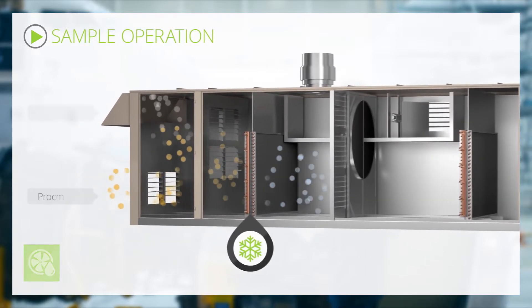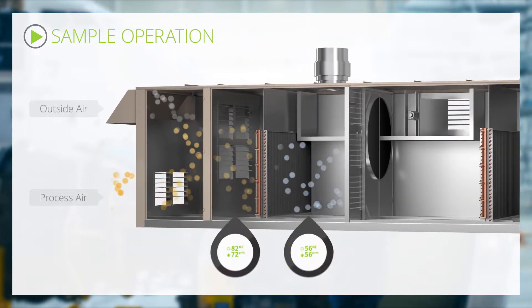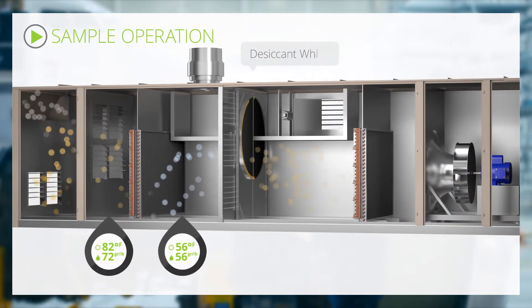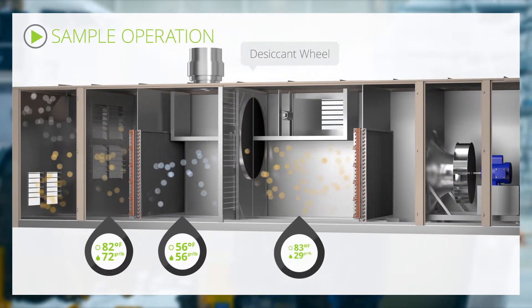In this example, humid process air is pre-cooled and partially dehumidified through the first coil. The cooled, saturated air then enters the desiccant wheel, which behaves as a dry sponge absorbing moisture.